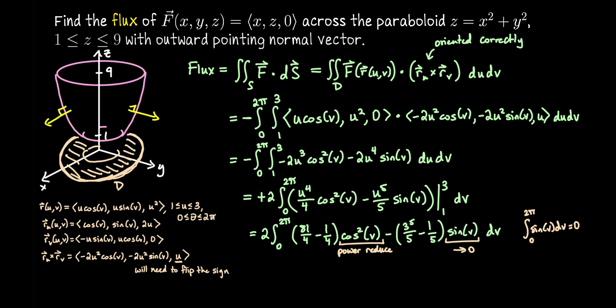Okay, let me clean this up a little bit more too. 81 minus 1 is 80. 80 divided by 4 is 20. I'll pull that out front and have 2 times 20 is 40. Then we're going to integrate from 0 to 2π. That leaves me with the cosine² v dv. Cosine² v, using the power reducing formula, can be written as 1/2 + cosine 2v / 2.